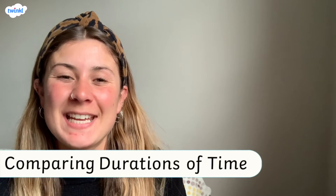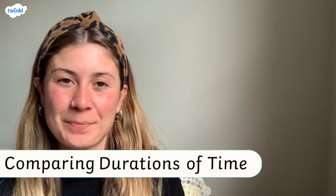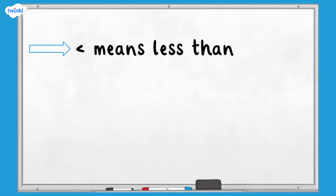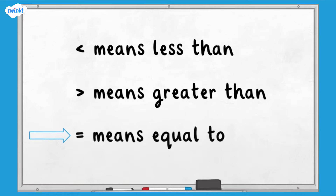Hi, this video is here to help you with comparing durations of time. Before we begin, let's remind ourselves about the inequality symbols that will be helpful when comparing durations of time. This symbol means less than. This symbol means greater than. This symbol means equal to.